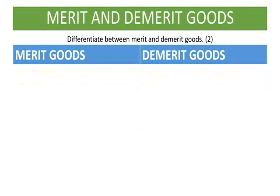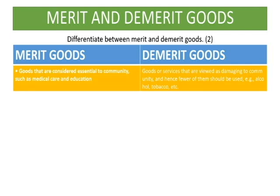Our first point is that merit goods are goods that are considered essential to the economy — for example, healthcare, education, and so on. But demerit goods are goods that are viewed as damaging to the community, and hence fewer of them should be used — for example, alcohol, tobacco, and so on.